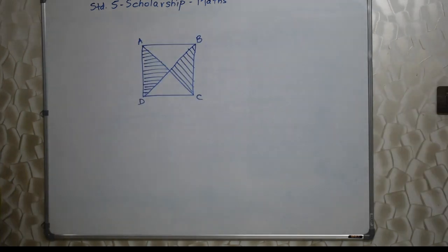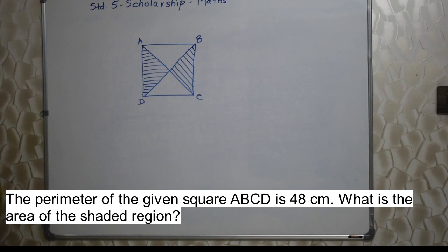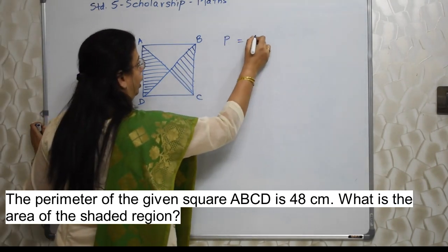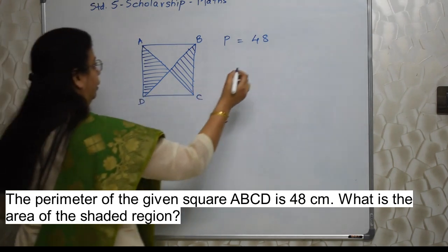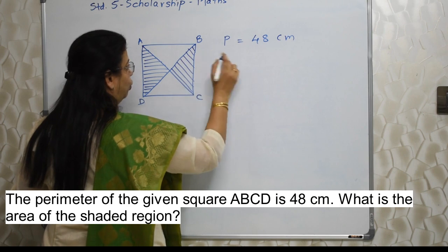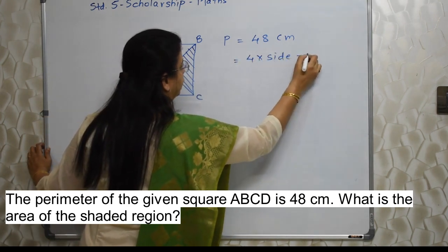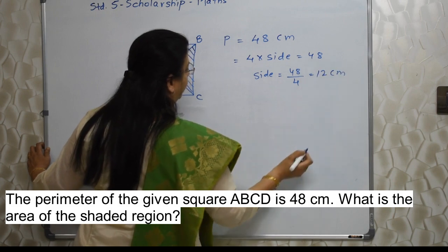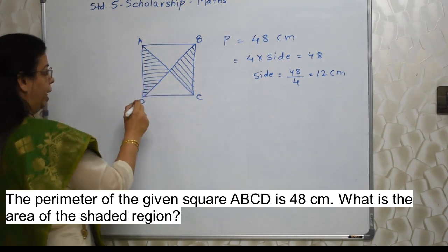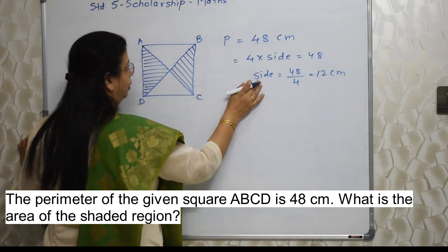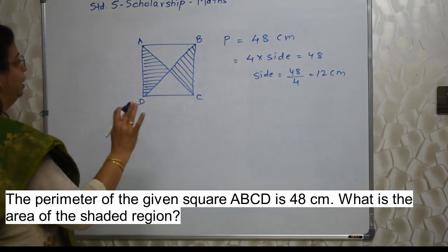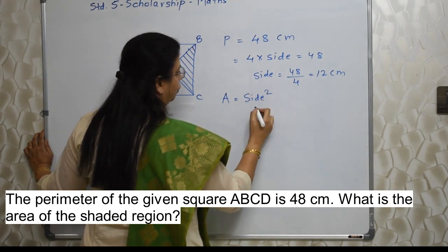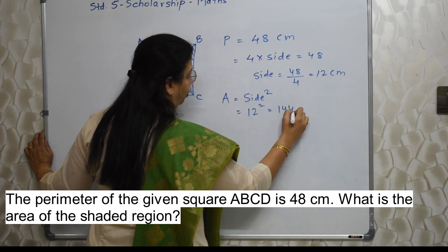Read the next sum properly. The perimeter of the given square ABCD is 48 centimeters. What is the area of the shaded region? The perimeter is equal to 48 centimeters. Perimeter of a square means 4 into side, so 4 into side equals 48, which gives side equals 48 upon 4, that is 12. We find the side because they asked for the area, and to know the area we must know the side. Once we know the side, the formula for area of a square is side squared — so it is 12 squared, that is 144 centimeters square.